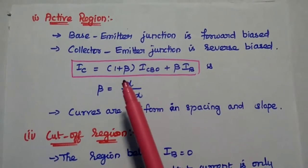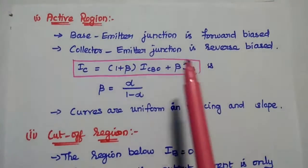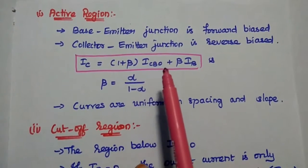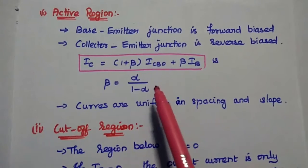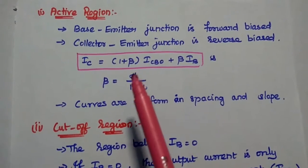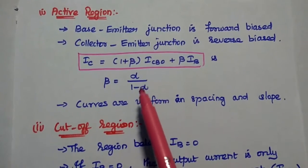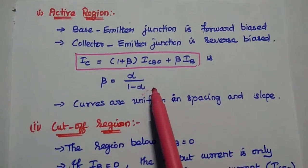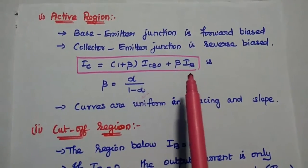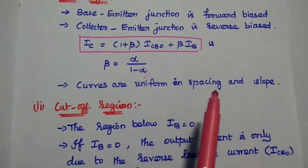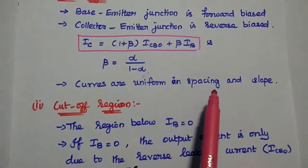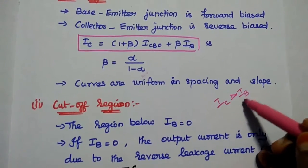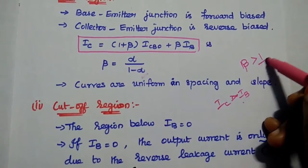Let's discuss each region. In the active region, the base emitter junction is forward biased and the collector emitter junction is reverse biased. The collector current is equal to (1 + beta)·ICBO + beta·IB. Here, beta is the amplification factor for CE configuration, which equals alpha divided by (1 minus alpha), where alpha is the current amplification factor for CB configuration. In the active region, IC is greater than IB, so the beta value is greater than 1, and curves are uniform in spacing and slope.